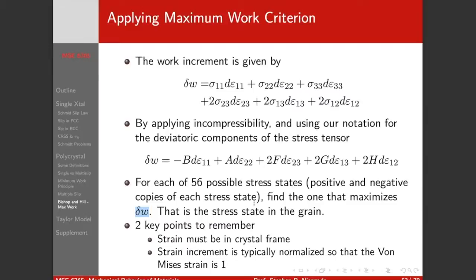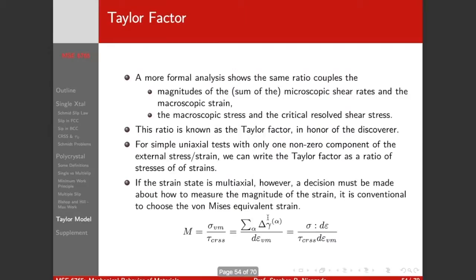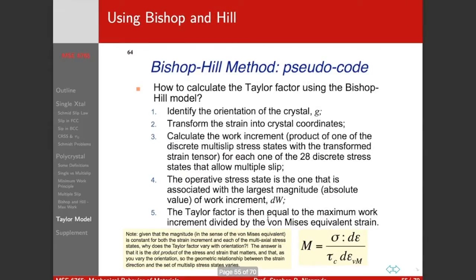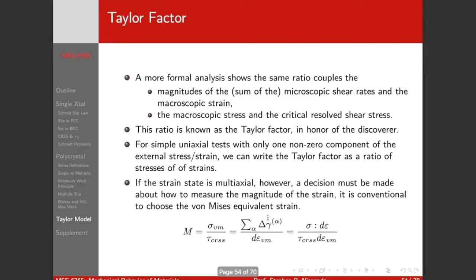A couple of key points to remember: the strain needs to be in the crystal frame, and we normalize the strain increment so that the von Mises strain is one. We'll work through an example with Bishop and Hill in class.